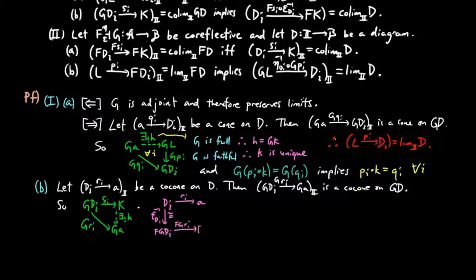Consider the following commuting diagram, where the top square commutes since epsilon is a natural isomorphism, and the bottom triangle commutes since the green triangle on the left commutes, and functors preserve commuting diagrams. Therefore, RI is equal to epsilon AFH FSI epsilon inverse DI for each I. So we have a factorization.